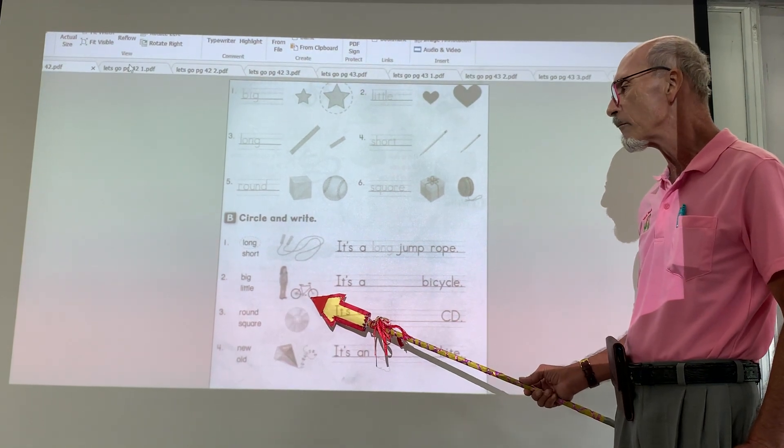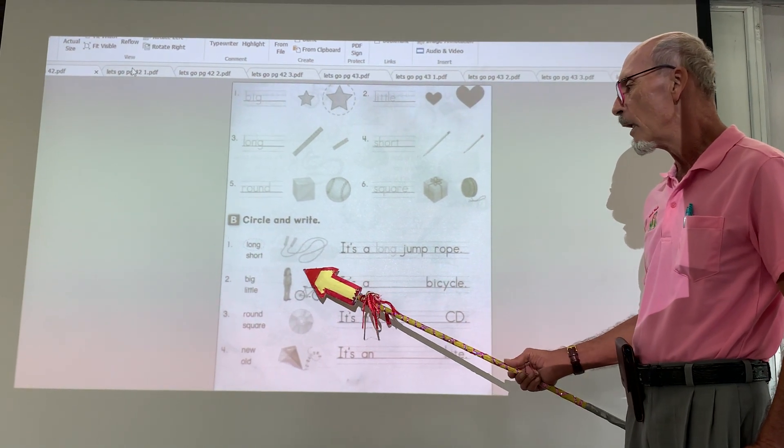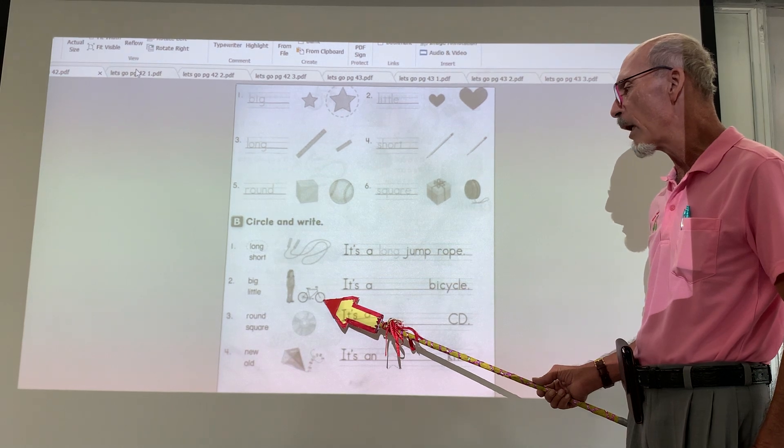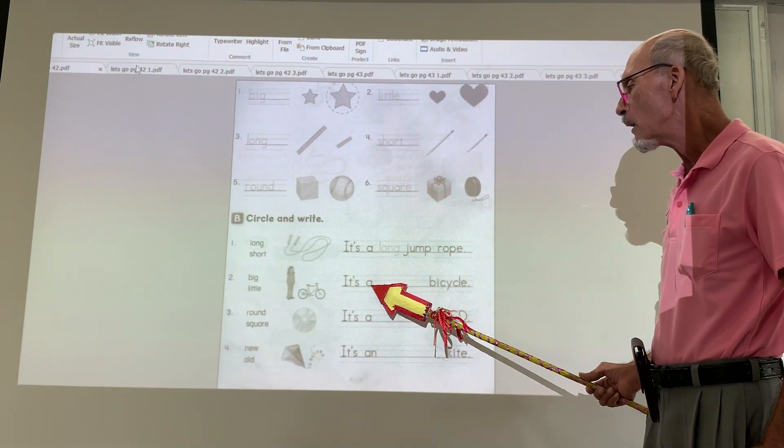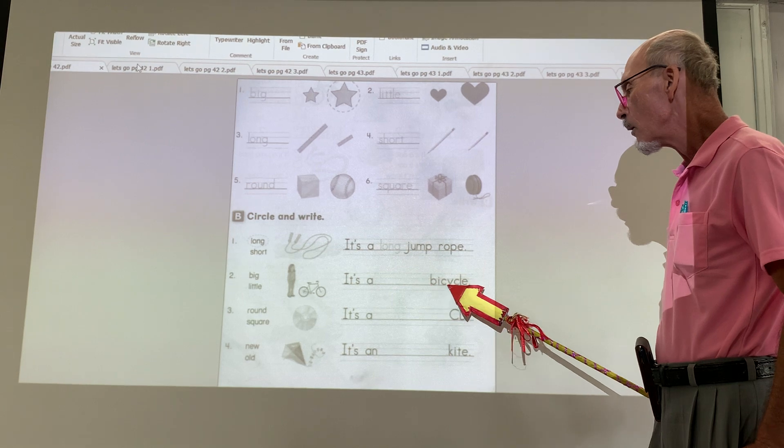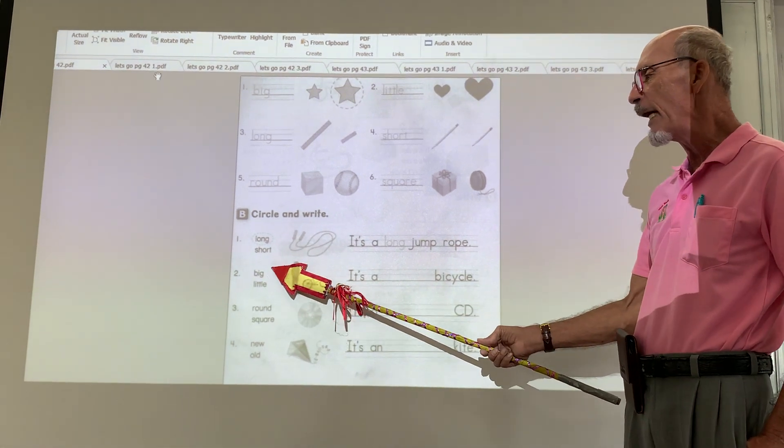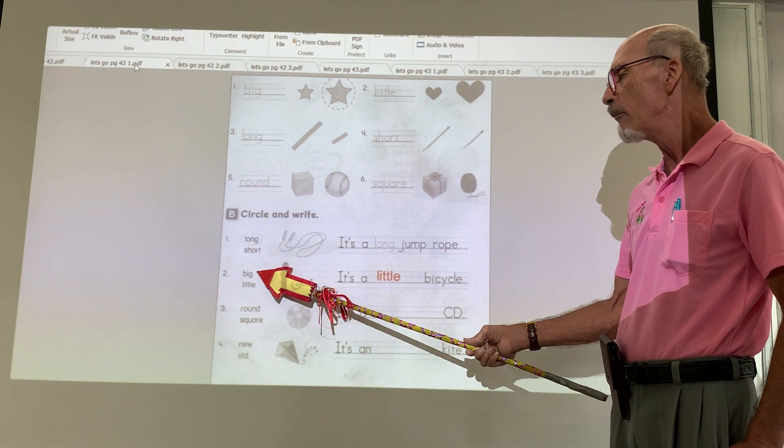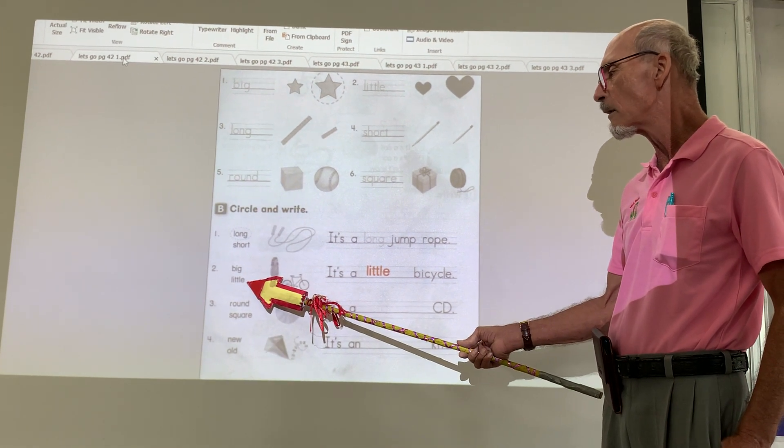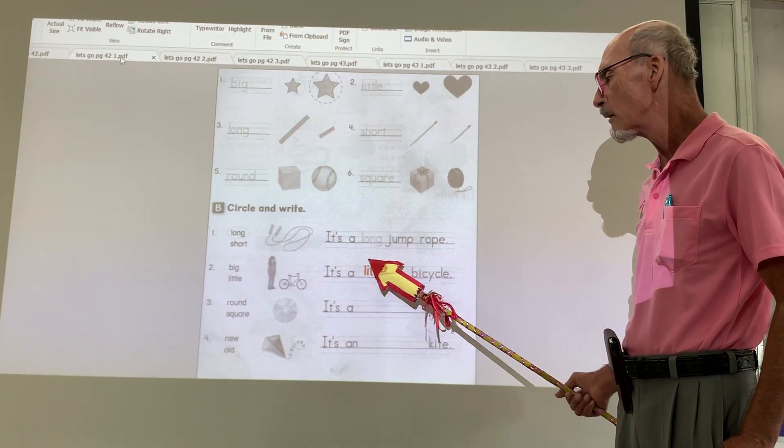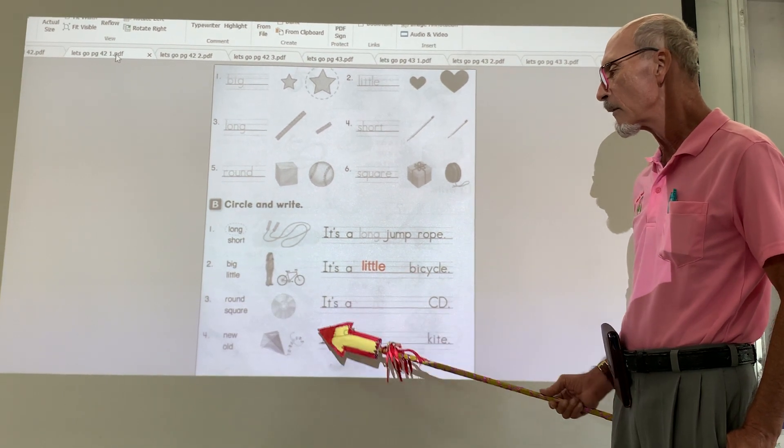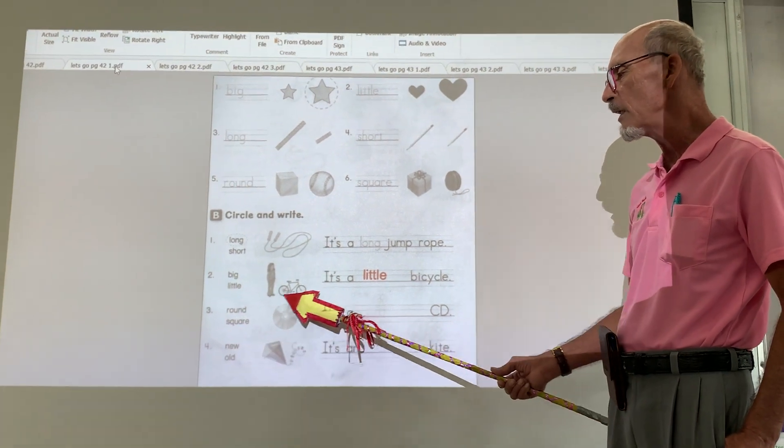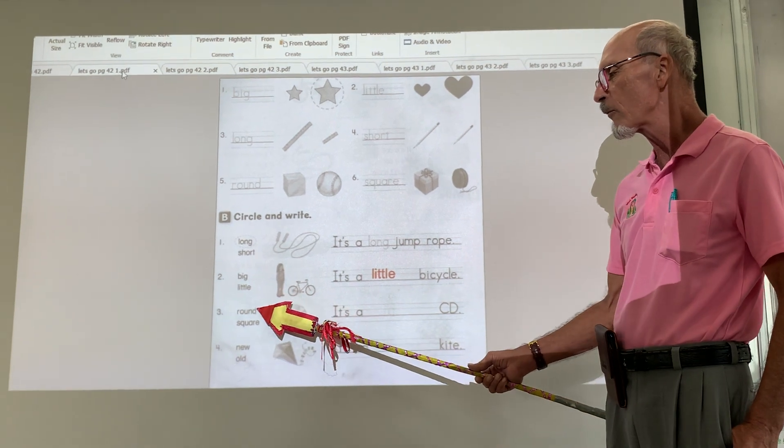Looking at this. A girl and a bicycle. It's a bicycle. Is it big or is it little? Big or little. The bicycle is little. Look at this. What is this? A CD, right?